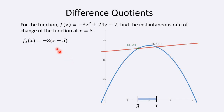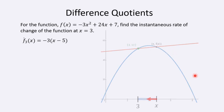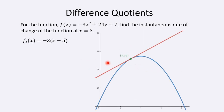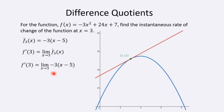To find the instantaneous rate of change, we let x approach 3. The slope of the secant line approaches the slope of the tangent line. We take the limit as x approaches 3 using this symbol for instantaneous rate of change at 3. That instantaneous rate of change is just the limit as x approaches 3 of f-bar sub 3 of x — the same difference quotient we just calculated. Plugging 3 into -3(x - 5) gives us the limit equal to 6, so the slope of the tangent line is 6.